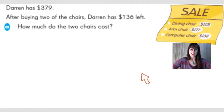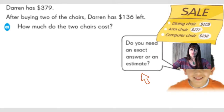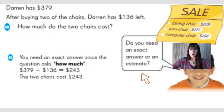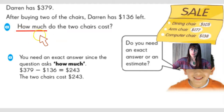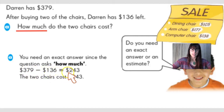One more problem. Darren has $379. After buying two chairs, Darren has $136 left. We'll have to solve two questions. The first one says: how much do the two chairs cost? Do you need an exact answer or an estimate? When they ask us 'how much do the two chairs cost,' you need to get the exact answer when you see the word 'how much.' I'll underline 'how much' because that's my keyword telling me to get an exact answer. We need to do subtraction to find out how much he spent on these two chairs. $379 minus $136 gives us $243.